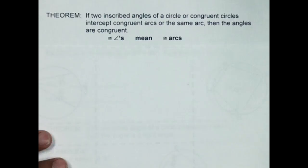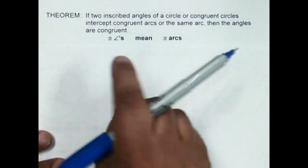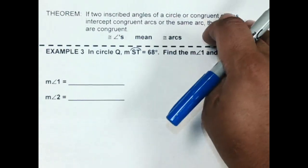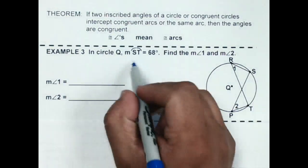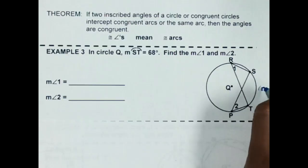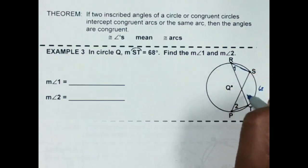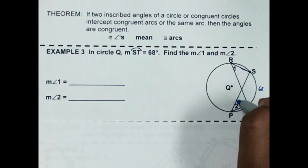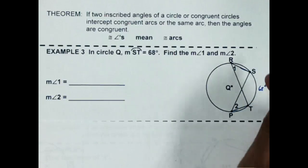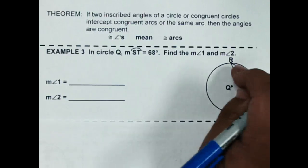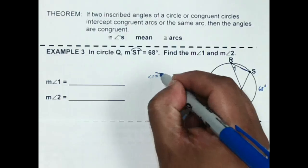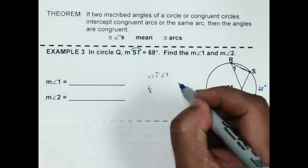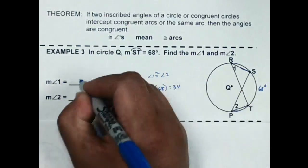The next theorem says that if two inscribed angles of a circle — or two separate circles — intercept congruent arcs, then the angles are congruent. In problem 3, arc ST is 68 degrees. The intercepted arc of angle R (angle 1) is ST, and the intercepted arc of angle 2 is also the same arc. Since the arc is the same for both angles, the angles are congruent. Both angle 1 and angle 2 are half of 68, which is 34 degrees.